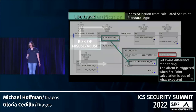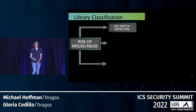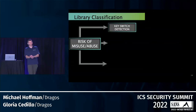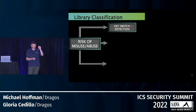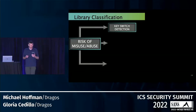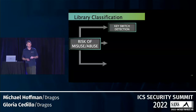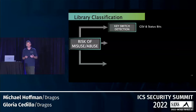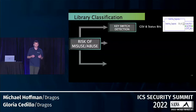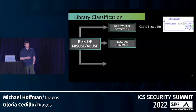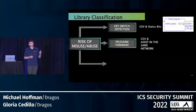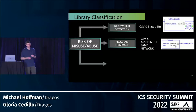From the risk of misuse perspective, one of my favorite capabilities is key switch detection — understanding what position your key switch is in: local run, the intermediate position which is remote (remote run, remote program), and then program mode. It's really important because a lot of folks don't know the position of their keys in their process environment. You can easily understand that by leveraging the 'get system value' and the status bits. For program and firmware, you can also do the same thing — grab that information off the system value remotely and store it to understand if it's changed.